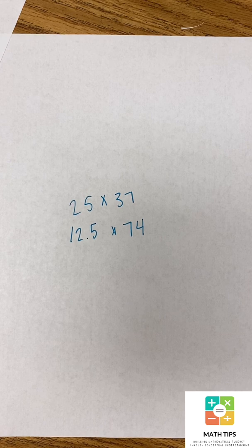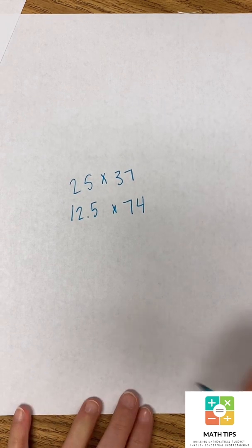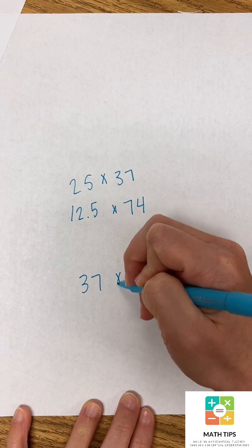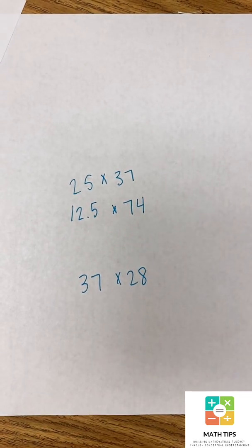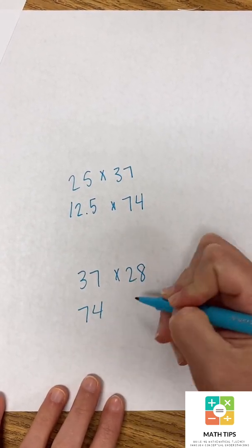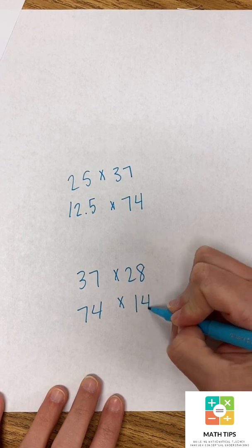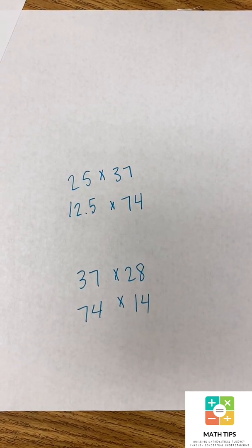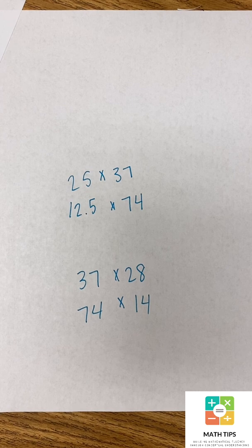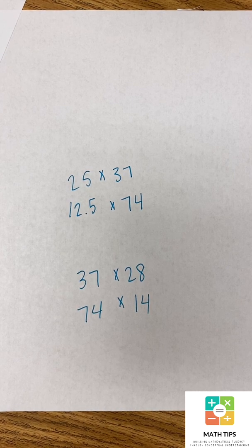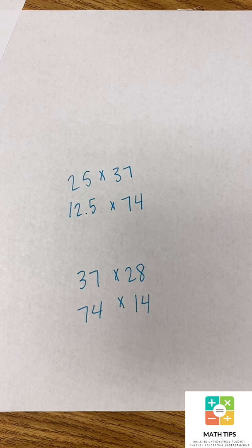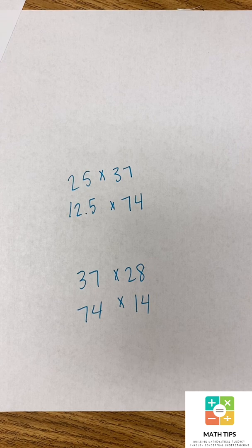And then also another example might be 37 times 28. Again, they could double 37 to get 74 and half 28 to get 14, but it doesn't really make the problem any easier to solve. So not every problem is double and half going to be the most efficient strategy for, but those are the kinds of questions that you want to ask kids so that they can really own that information. They can explore it and learn that on their own.